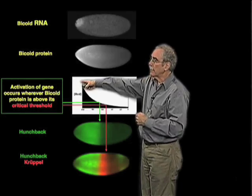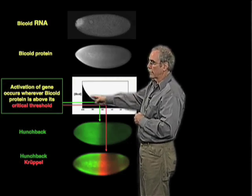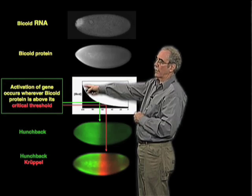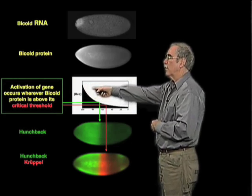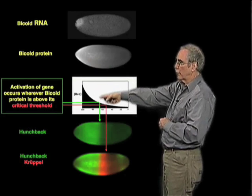What then happens—this is a little cartoon diagram—is that the highest concentrations of the Bicoid protein will be at the anterior end of the egg, and the concentration will fall.